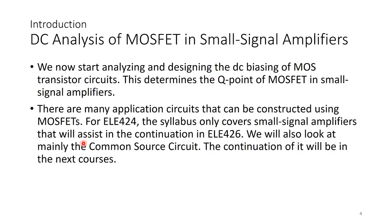DC Analysis of MOSFET in small signal amplifiers. We now start analysing and designing the DC biasing of MOS transistor circuits. If we've done the MOSFET device, now we're looking at DC analysis, which determines the Q point of MOSFET in small signal amplifiers. There are many application circuits that can be constructed using MOSFETs, but for ELE 424, the syllabus only covers small signal amplifiers that assist in continuing subjects such as ELE 426. We will look mainly at the common source circuit.